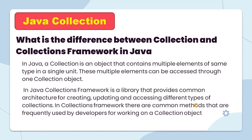What is the difference between collection and collections framework in Java? In Java, a collection is an object that contains multiple elements of the same type in a single unit. These multiple elements can be accessed through a collection object. The collections framework is a library that provides the common architecture for creating, operating, and accessing different types of collections, with common methods frequently used by developers.